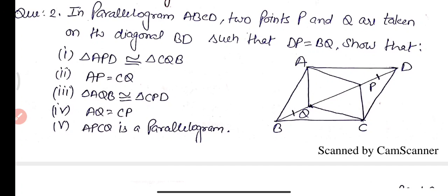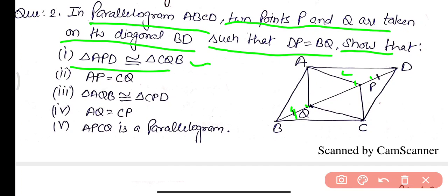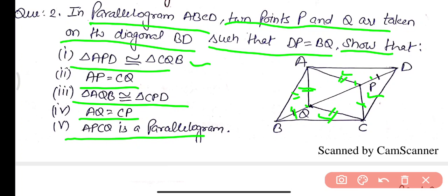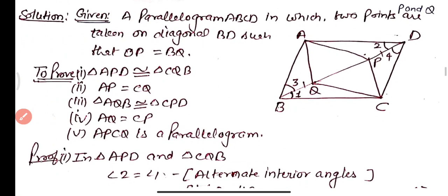Practice Question 2: In parallelogram ABCD, two points P and Q are taken on diagonal BD such that DP equals BQ. We need to prove that triangle APD is congruent to triangle CQB, AP equals CQ, triangle AQB is congruent to triangle CPD, AQ equals CP, and APCQ is a parallelogram.